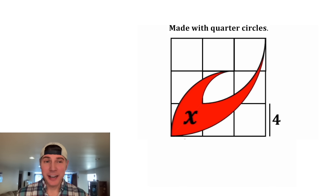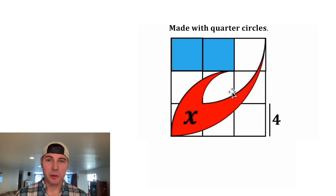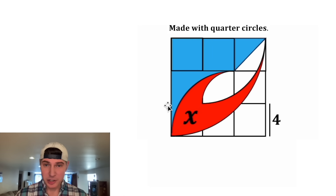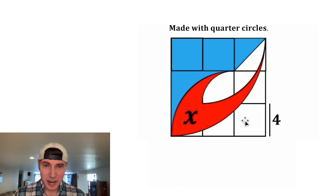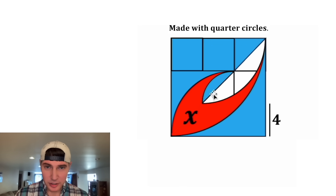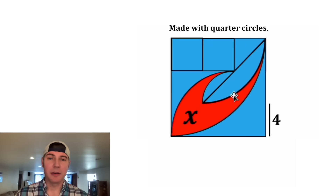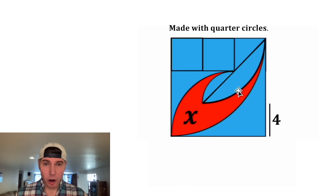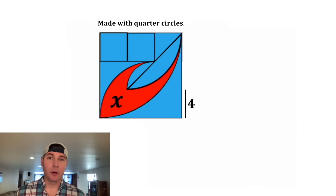I'm going to find X by tackling everything else around it. We have a square right here and another square here. We have this triangle here, and we have this region right here — I don't even know what you would call that — and the same type of region right here. And then we have a thing called a segment of a circle, and up here we have another segment of a circle. So if we can find the area of all of these blue pieces, then we can add that to X and set it equal to the whole square.